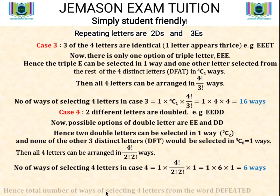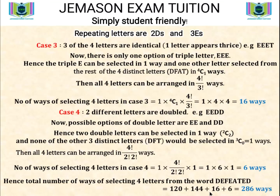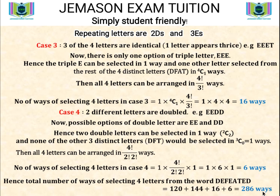The total number of arrangements of four letters from the word DEFEATED equals case one plus case two plus case three plus case four: 120 plus 144 plus 16 plus 6, giving a total of 286 ways. Thanks for watching and see you in the next video.